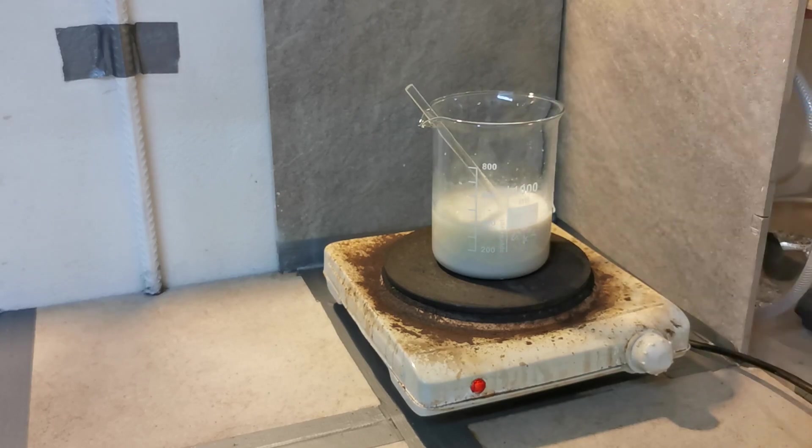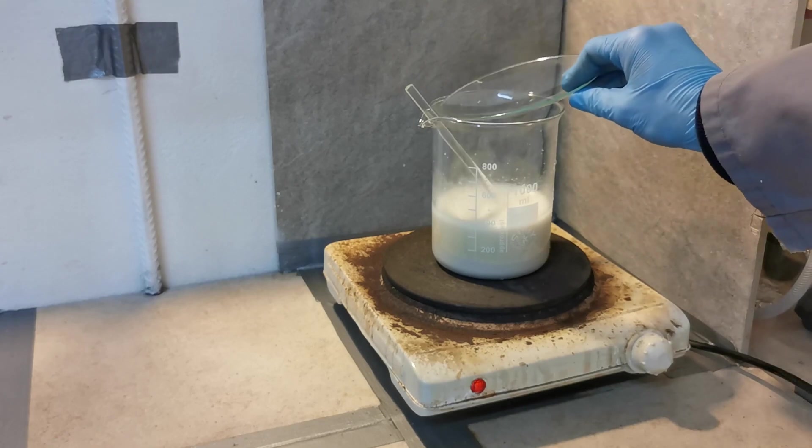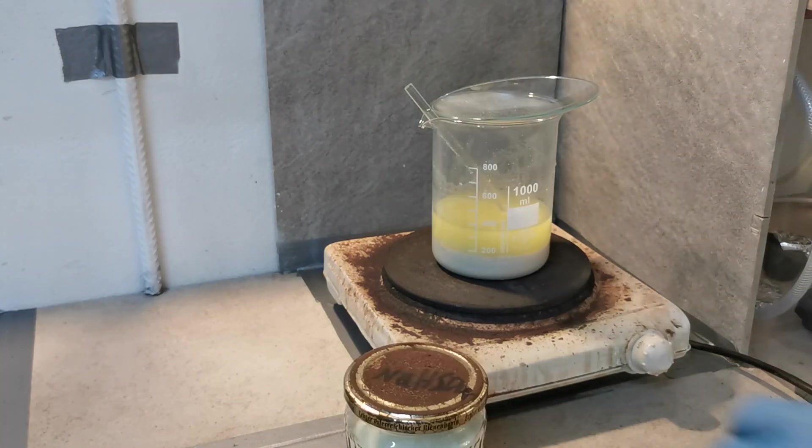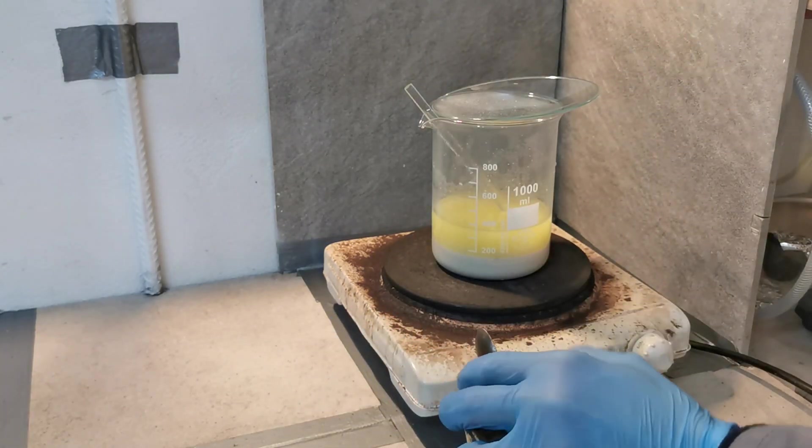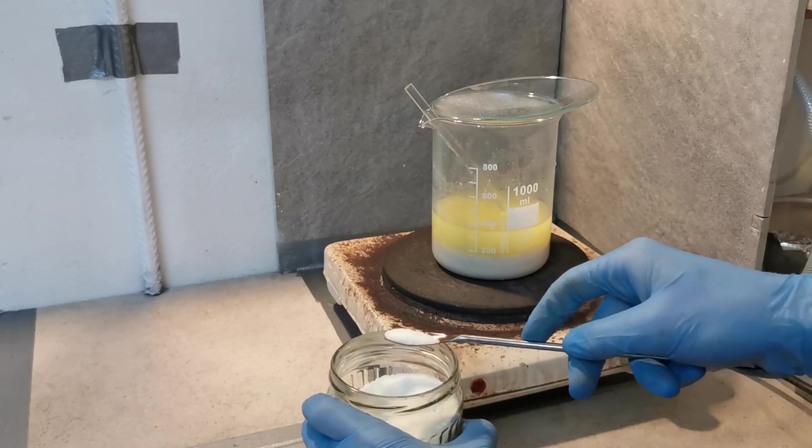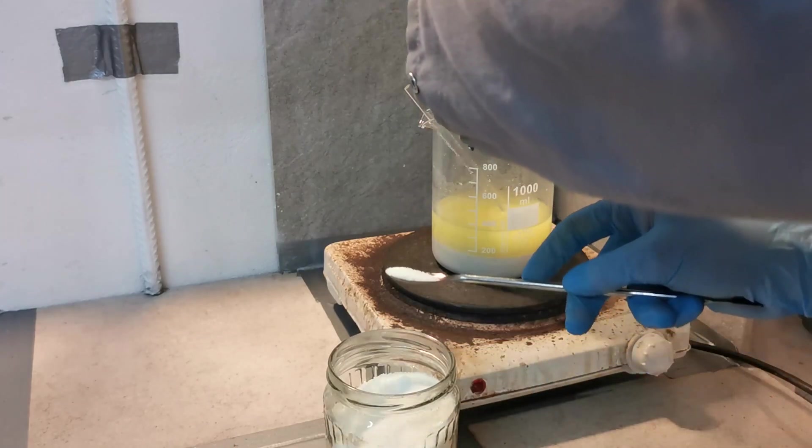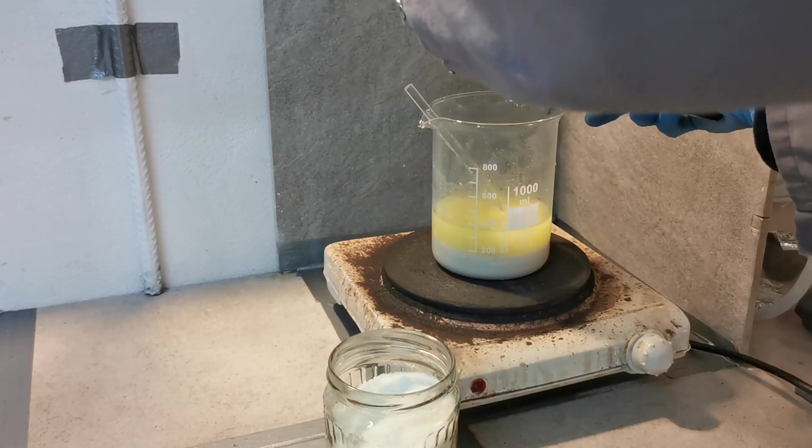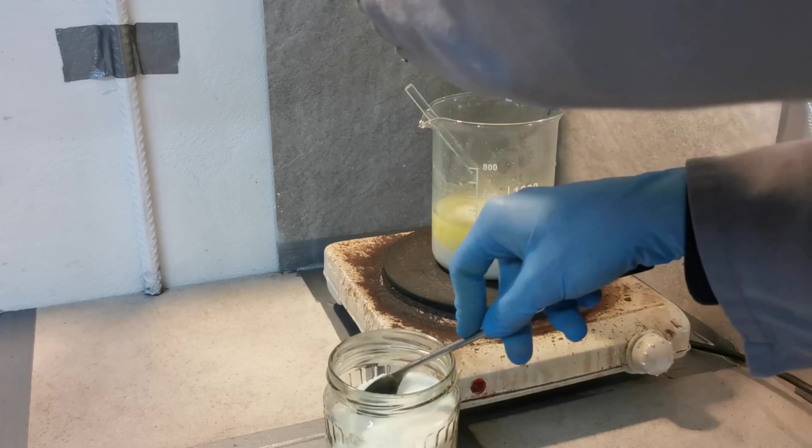In general, barium sulfate is not soluble in this solution, but since we already heated it, it is possible some of it has already been reduced into a soluble form. So I added some sulfate in the form of sodium bisulfate, which is cheaper and easier to get than sulfuric acid and will also make sure all barium stays precipitated.